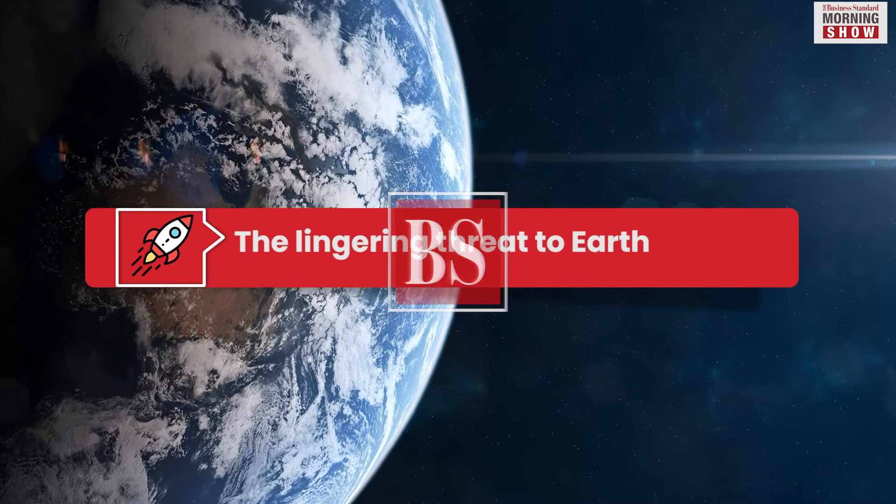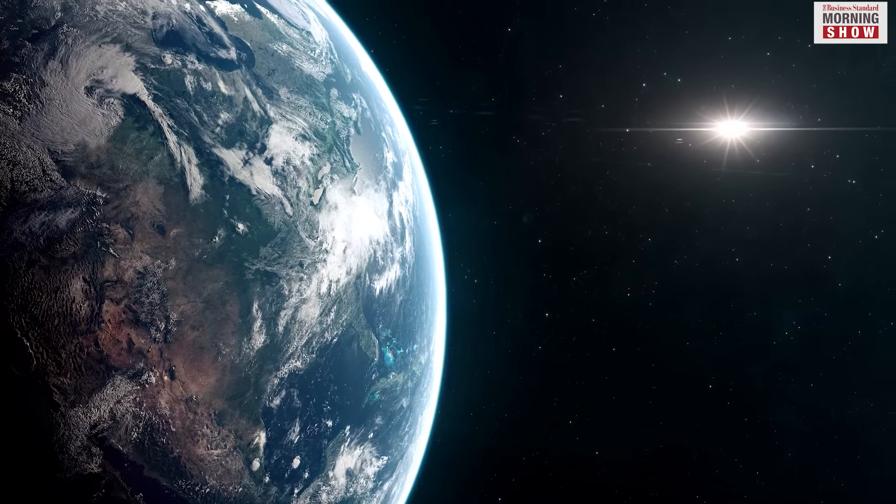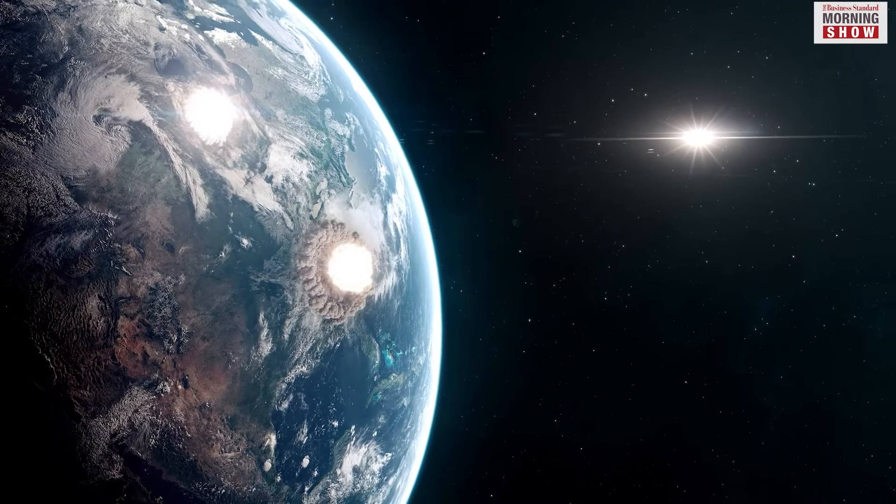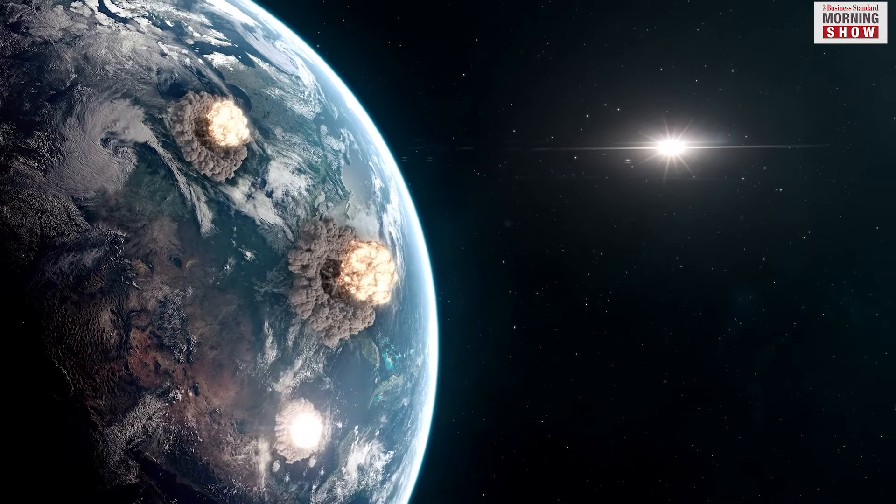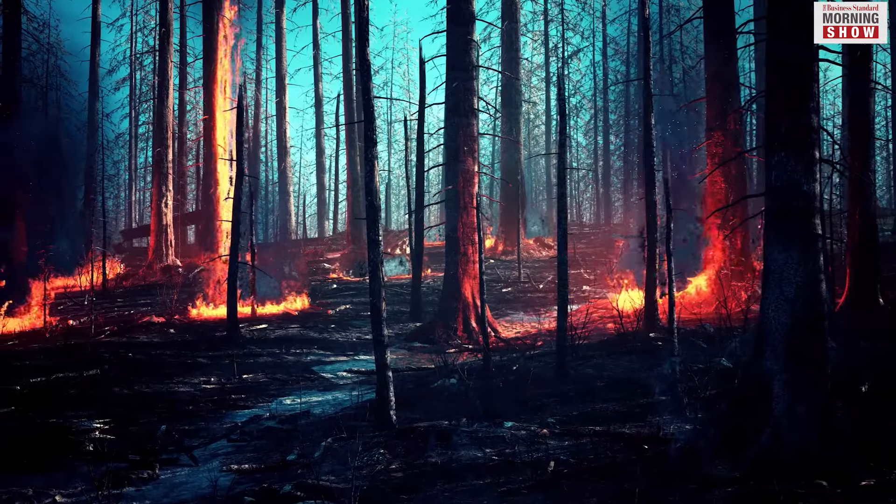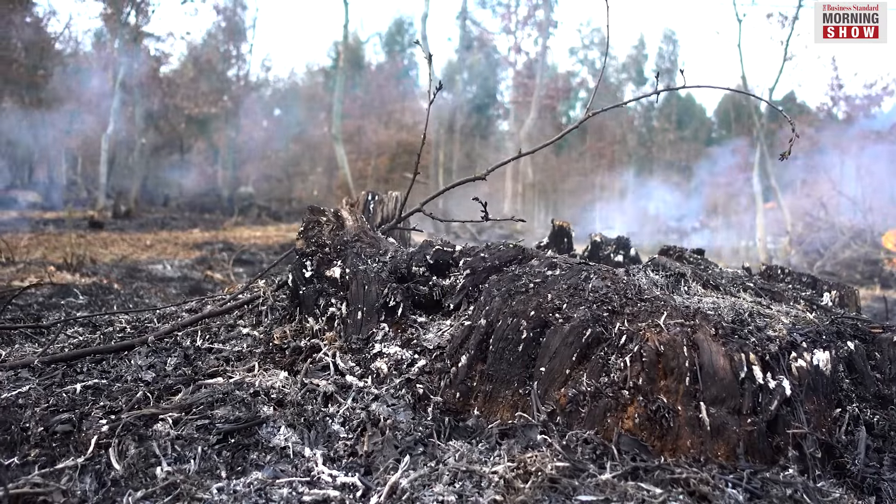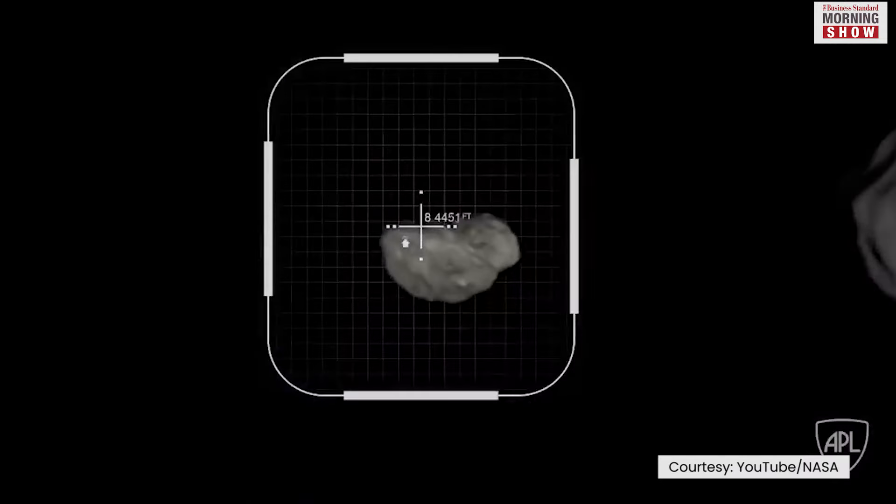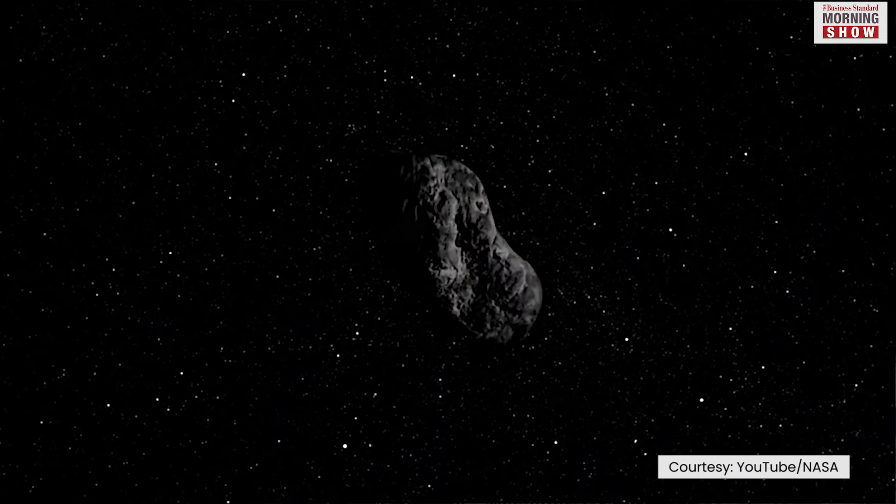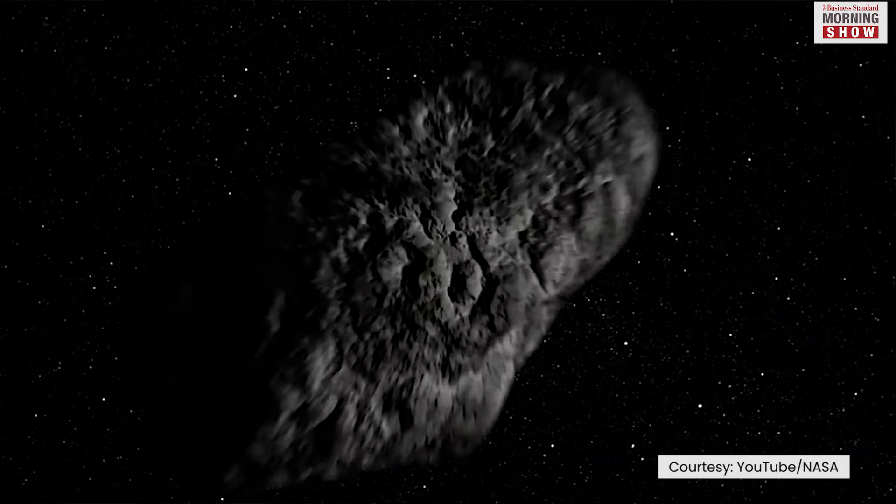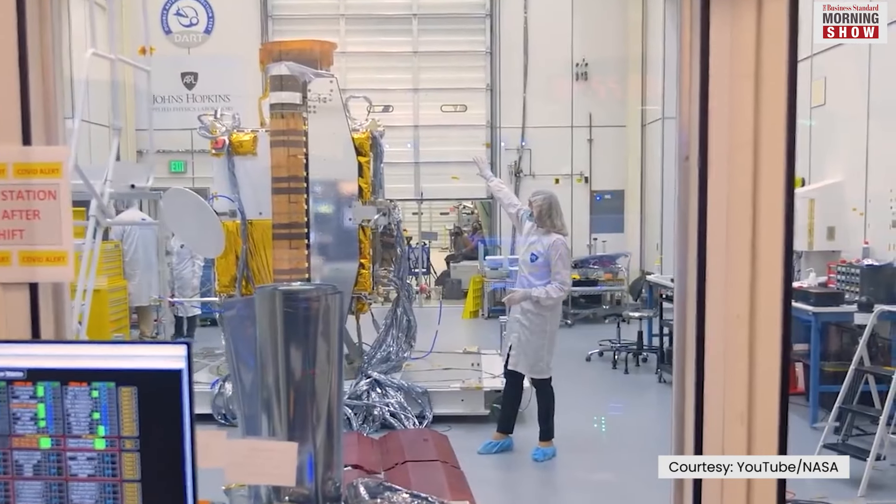The last time a big asteroid crossed paths with the Earth was about 66 million years ago. The impact was so devastating that it wiped out 70 percent of plants and several species, including the mighty dinosaurs. Although chances of an asteroid that big hitting the Earth again in the near future are bleak, scientists don't rule it out completely.